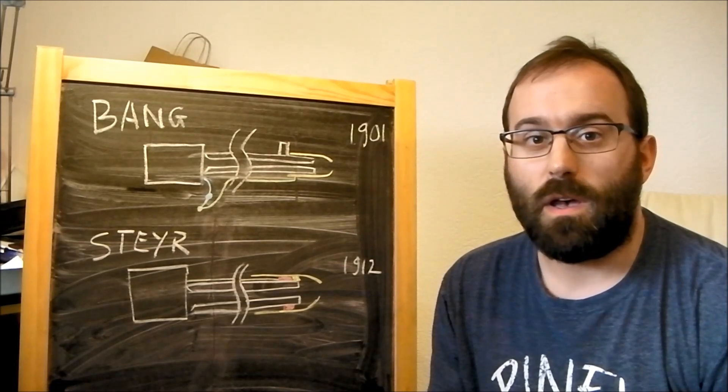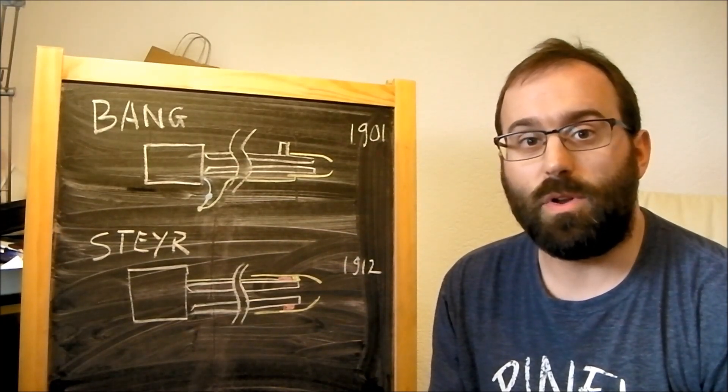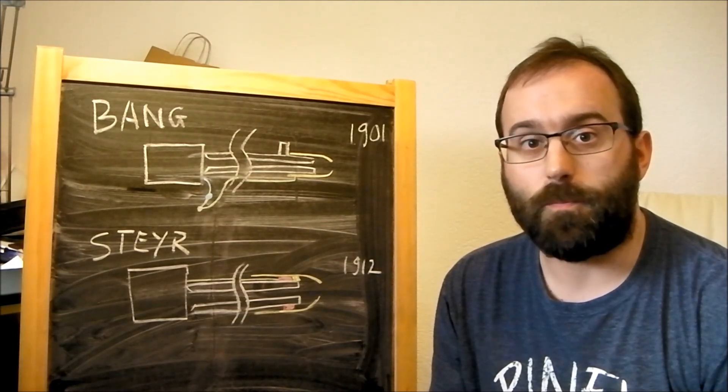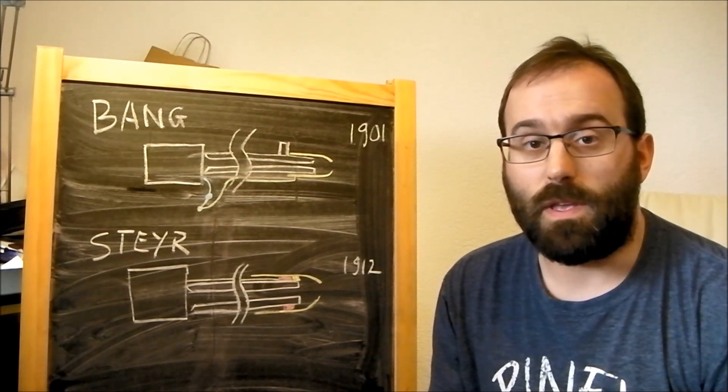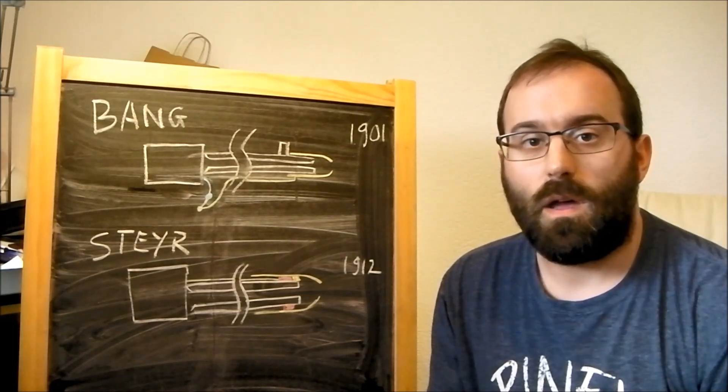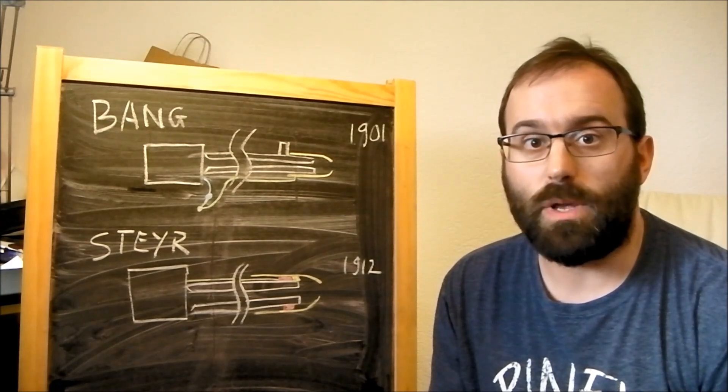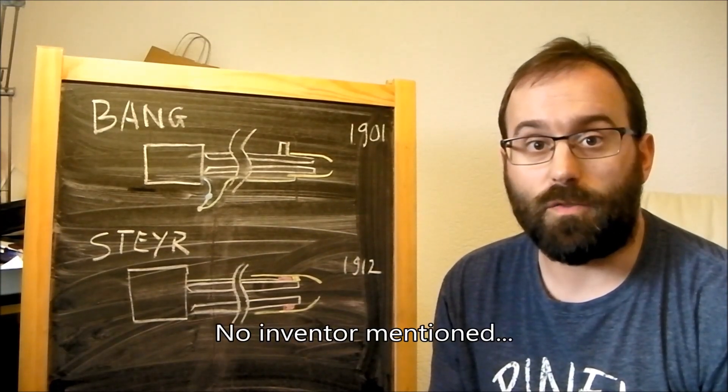In a slight moment today I went through the patent databases and had a look at the earliest example of each type of gas system that I could find. And I found the Bang type gas system with a date of 1901 on it and I found the G41 type gas system in a document filed in several European countries in 1912 by the Steyr factory.